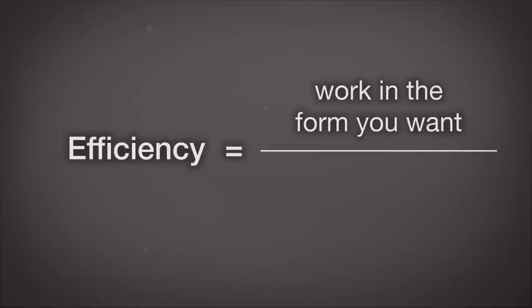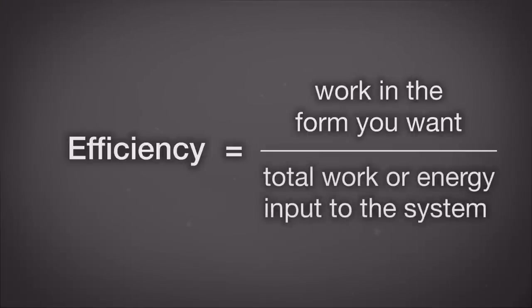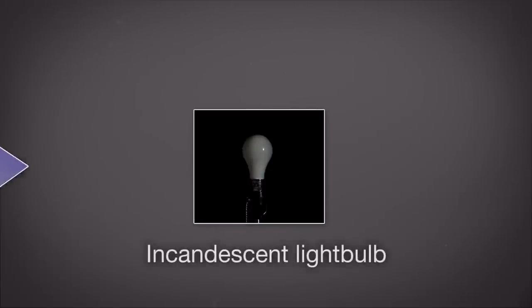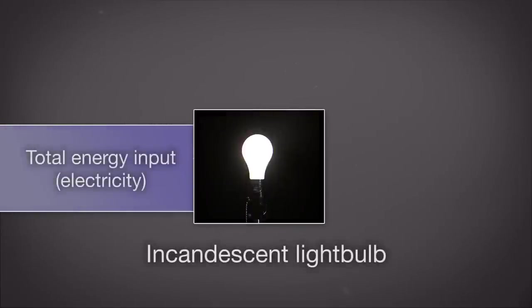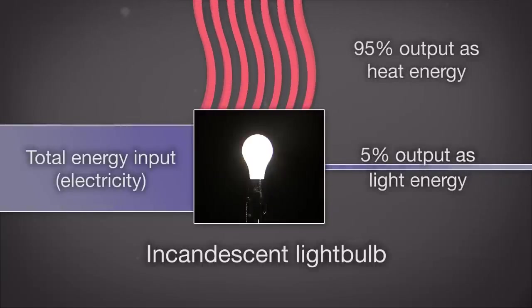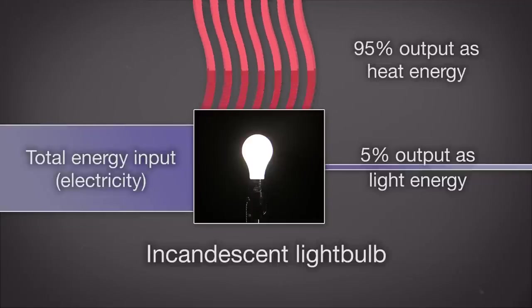It's also important to understand energy efficiency and energy quality. Energy efficiency is the ratio of the amount of work that is done to the total amount of energy introduced into the system. When we look at an old-fashioned incandescent light bulb, it's typically about 5% efficient — meaning 5% of the electricity put into the bulb came out as light, and the other 95% is waste heat that you don't need or want.